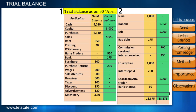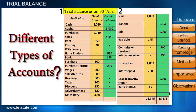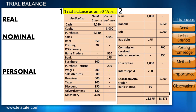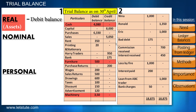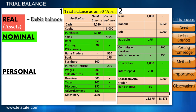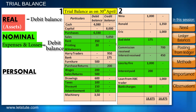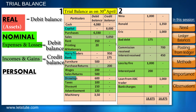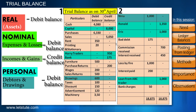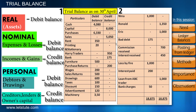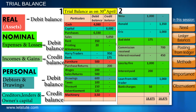Looking at the trial balance we prepared, can you find anything in common for different types of accounts? All real accounts are showing a debit balance. For nominal accounts, all expenses show a debit balance, whereas all incomes or gains show a credit balance. For personal accounts, either a debit or a credit balance is possible. This remains true in almost all cases, and with a little practice it should become second nature.